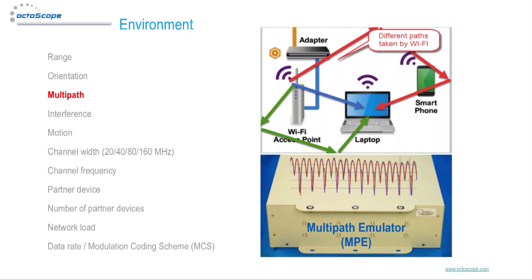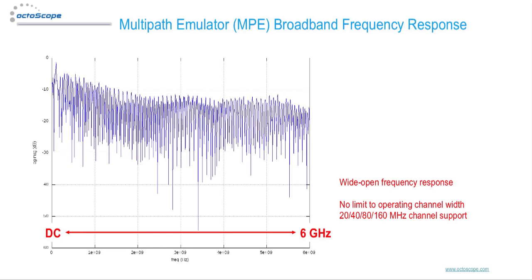The Octobox multipath emulator, or MPE, accurately models multipath. The MPE is completely broadband with a power delay profile matching that of the IEEE 802.11 model of a typical house. The broadband nature of the Octobox multipath emulator allows you to run multi-channel system tests and to validate automated channel adaptation algorithms — something that would be impossible using a traditional fader that only supports one channel at a time.